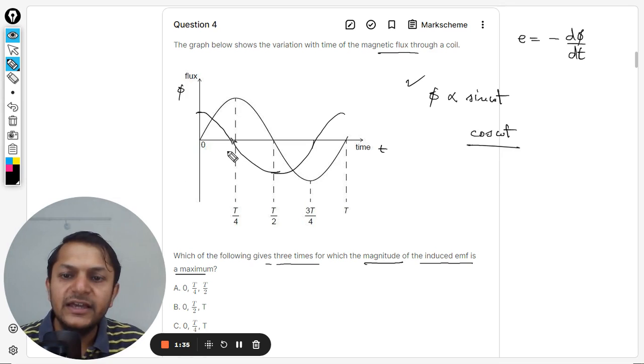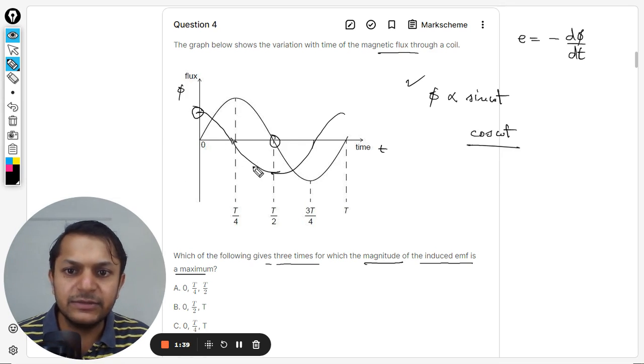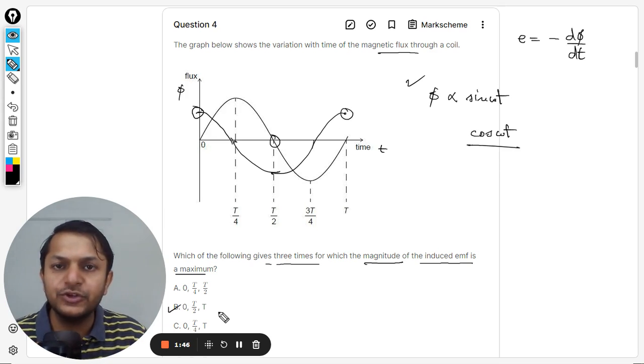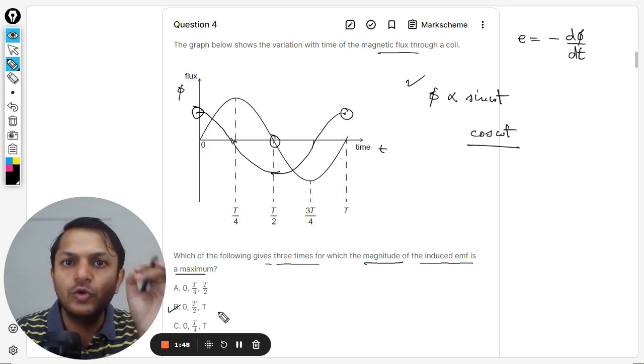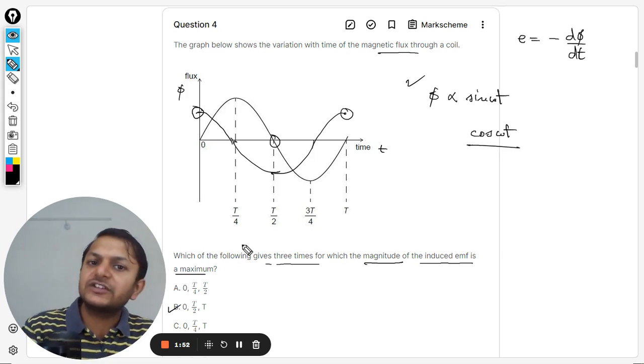Clearly, when is the cosine maximum? It is at 0, at t by 2, and then at t. So taking these options here, b seems to be the correct option because it is 0, t by 2, and t. So clearly b will be the right option.